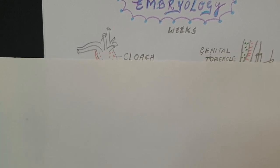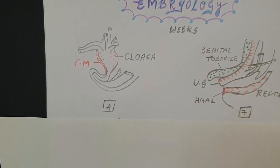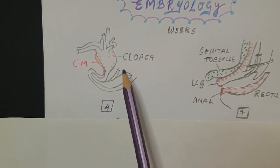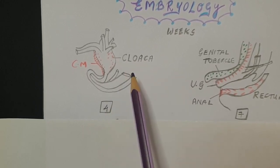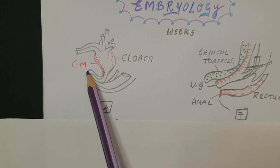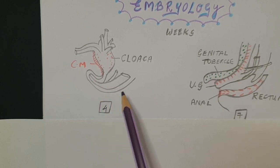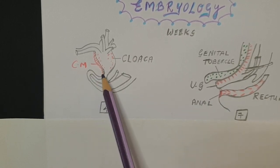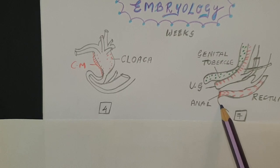The developmental period will be described over a period of a few weeks. We begin with the formation of the cloaca. The cloaca is a common structure from where the urogenital system and the anorectal system both form — this is the most important structure to remember. At around four weeks the cloaca membrane forms, and by approximately the seventh week it starts growing into the cloaca and divides it into the urogenital system and the anorectal system.